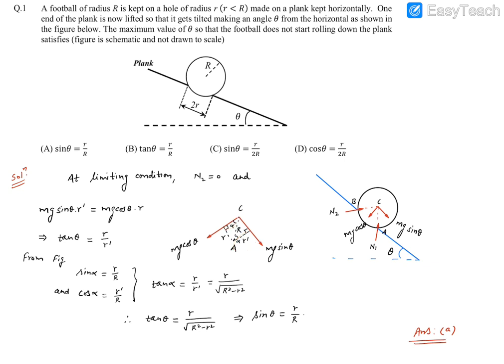And let's say this angle is alpha. So if this angle is alpha, then you'll find alternatively this angle is going to be alpha. And this distance, AC distance will always be equal to radius. So Mg cos theta will be multiplied by R, and Mg sin theta will be multiplied by R dash. So these two torques must balance each other at just limiting condition.